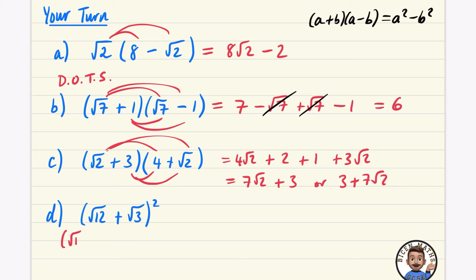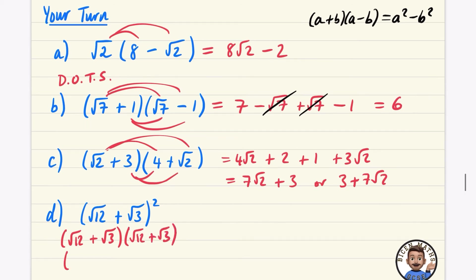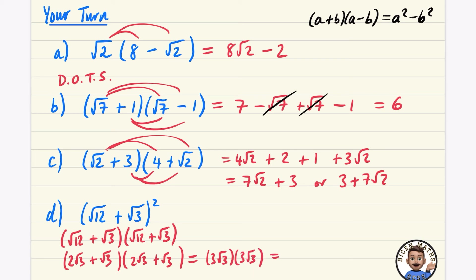For the last question, it's helpful to rewrite (root twelve plus root three)² as double brackets. You might also prefer to simplify root twelve to two root three first. So you'd have (two root three plus root three)(two root three plus root three). Two root three plus root three is three root three, so it becomes three root three multiplied by three root three. Three times three is nine, and root three times root three is three, giving nine times three, which is 27.